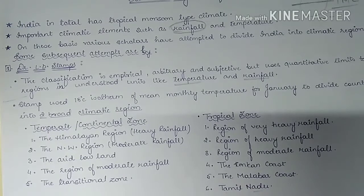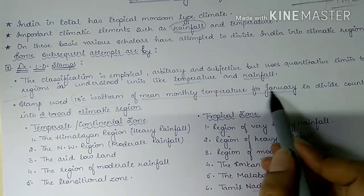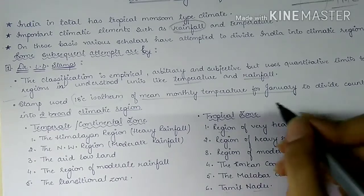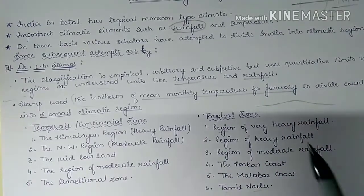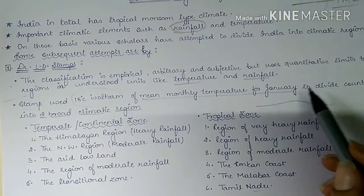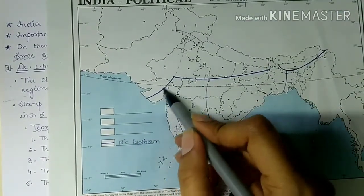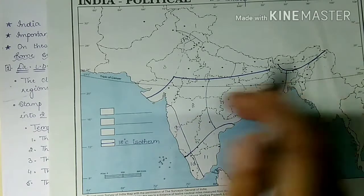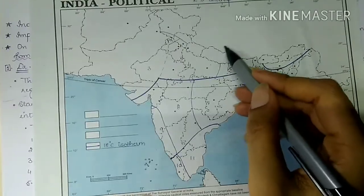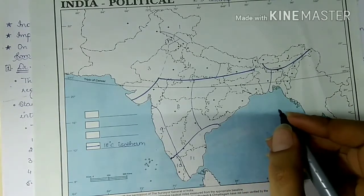What LD Stamp basically did was broadly classify India into two regions on the basis of the 18-degree isotherm. This isotherm was calculated based on mean monthly temperature of July. The line joining these points divided India into two parts: the northern temperate or continental zone, and the southern tropical zone.